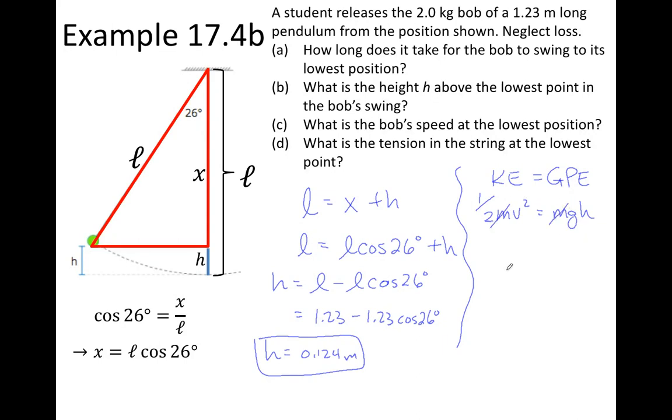I could calculate the energy in the system, but I don't need to. So half times that speed squared will be g, which is 10, times the height that we just determined was 0.124. If I rearrange for v squared and calculate, I get v squared is 2.48. And taking the square root, I'll get that maximum speed of 1.57 meters per second. And we're going to need that value to do part D.